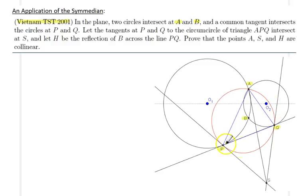Let the tangents at P and Q to the circumcircle of triangle APQ... So the circumcircle of APQ, I have it as a red circle here, and I did go ahead and draw the tangents at P and Q to the red circle, and I realized that those two tangents meet at point S.